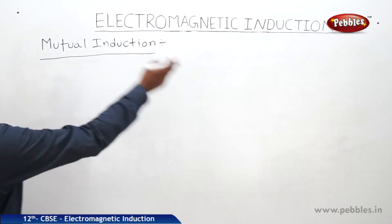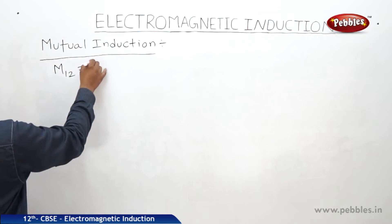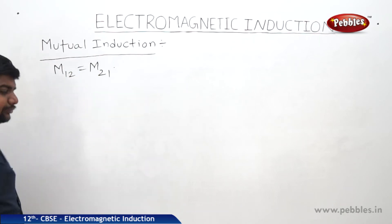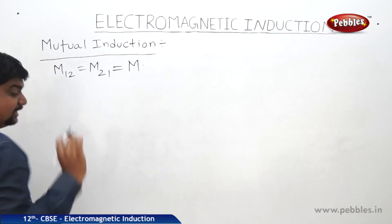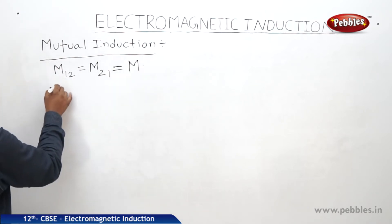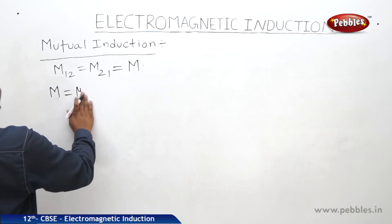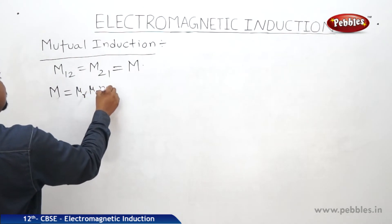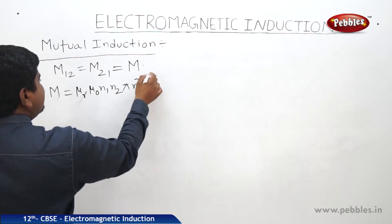Next we will see the useful expression for the mutual inductance. What we can understand? M12 is equal to M21. Suppose we can write M12 is equal to M21 is equal to M. Then the equation will change like this: mu R relative permeability mu 0 N1 N2 pi R1 square L.